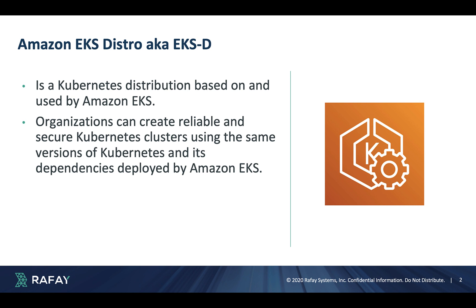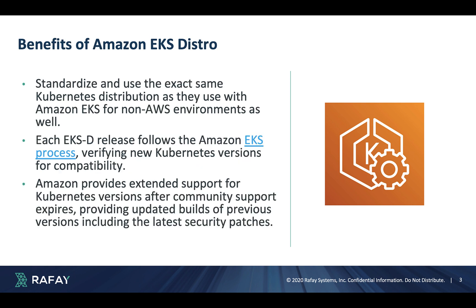So, what is Amazon's EKS Distro? It is essentially upstream Kubernetes that is leveraged and used by Amazon's EKS. EKSD allows organizations to create reliable and secure Kubernetes clusters using the same versions of Kubernetes used by Amazon EKS. The benefits are that you can standardize on the same distribution as your Amazon EKS clusters, but also use them for non-AWS environments.